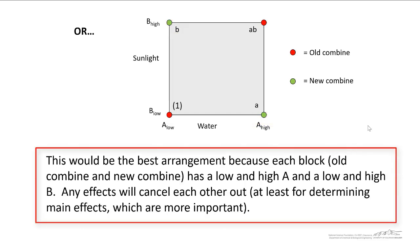And it turns out that this is the best arrangement because each block, the old combine and the new combine, has a low and a high value of A, and a low and a high value of B. Any effects will cancel each other out, at least for determining main effects, which are most important.